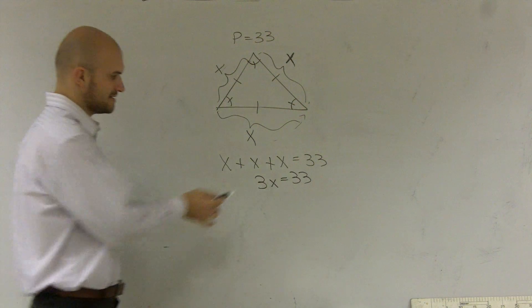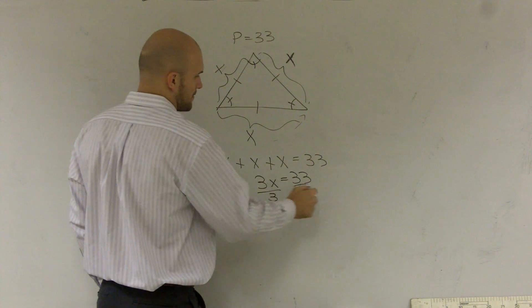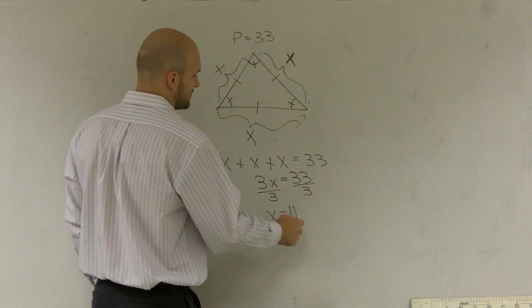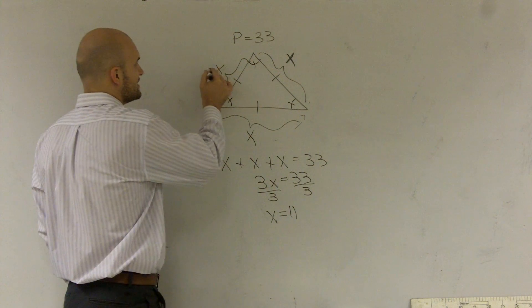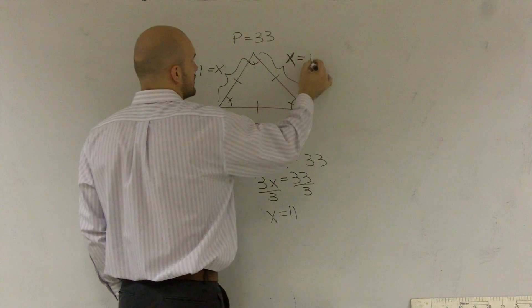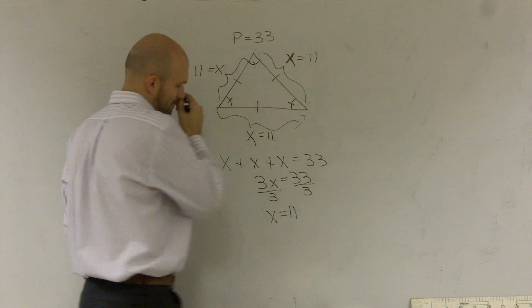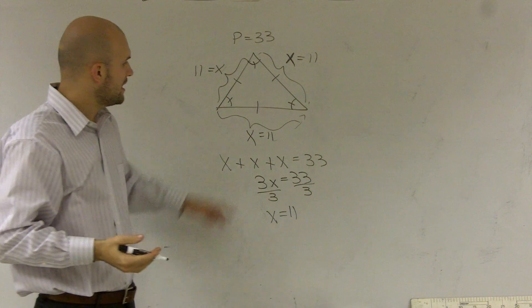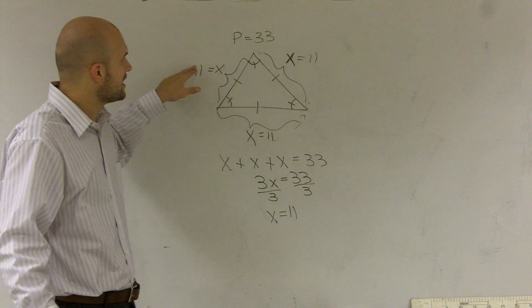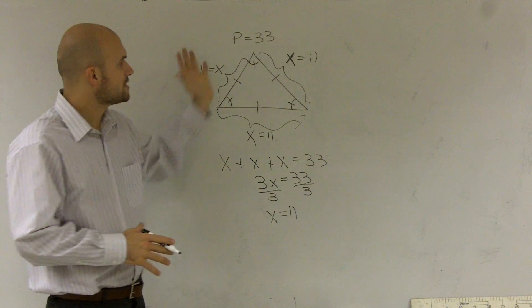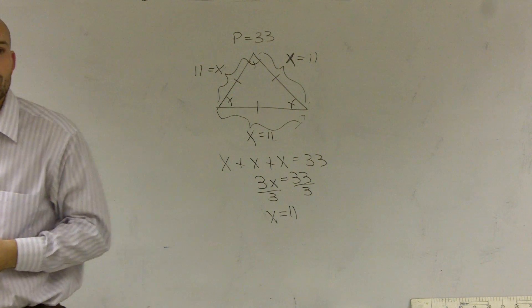Now what I can do is divide by 3. Now I get x equals 11. Therefore, the sides are 11, 11, and 11. If I wanted to check my work, I'd say 11 plus 11 plus 11. Does that equal 33? Yes, it does. So that's how you find the side length when given the perimeter.